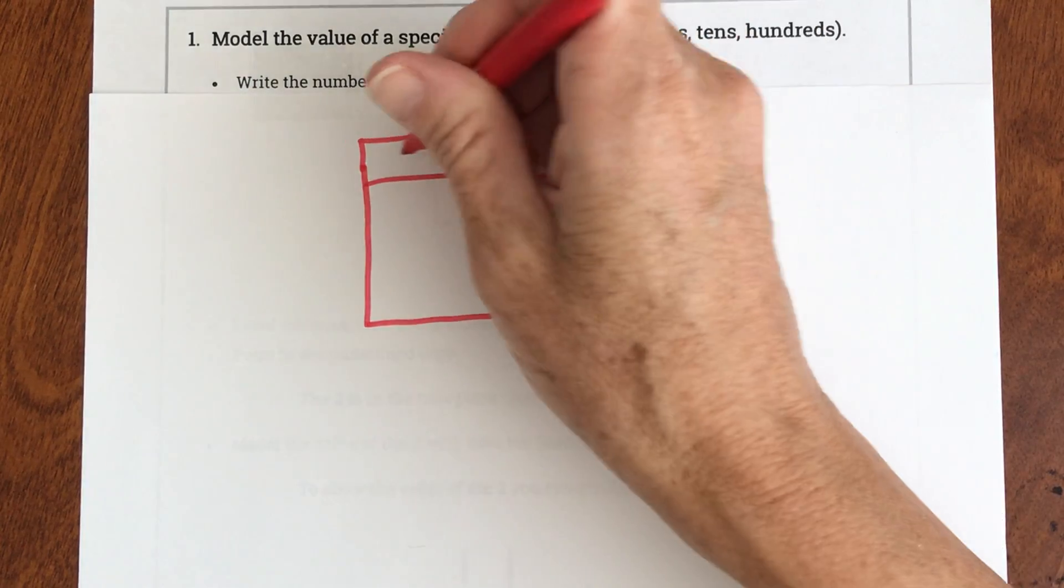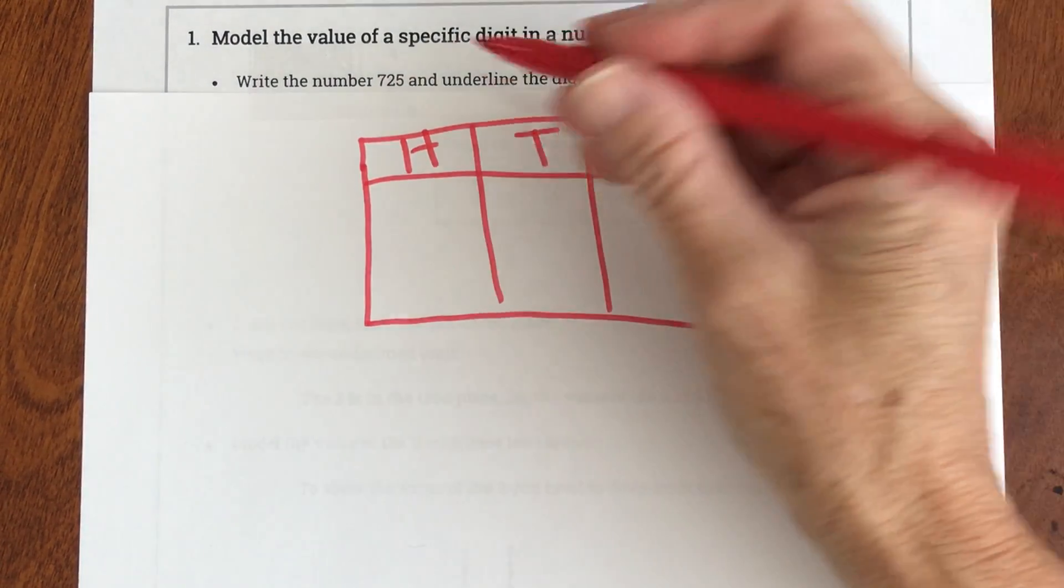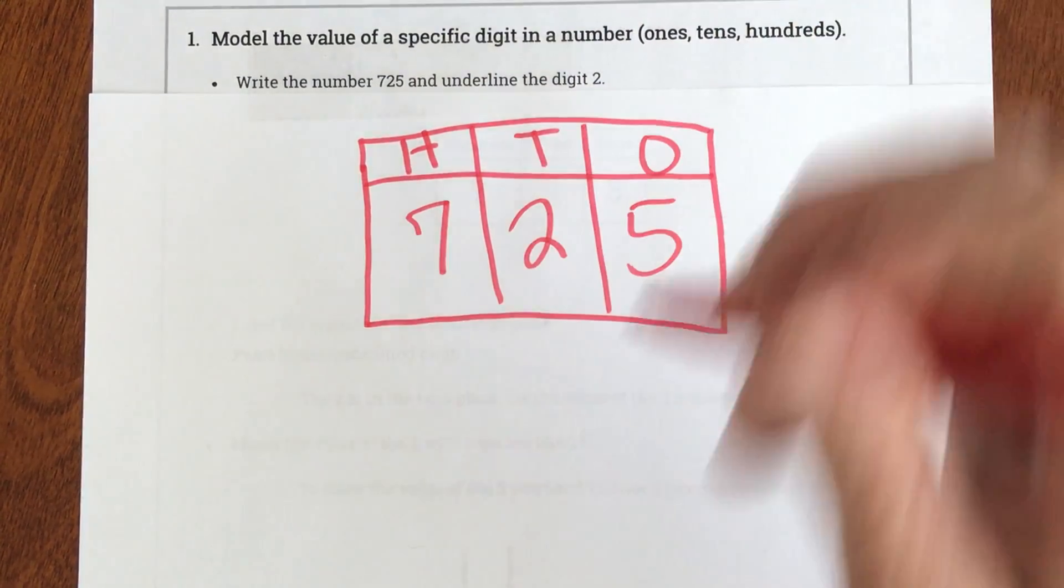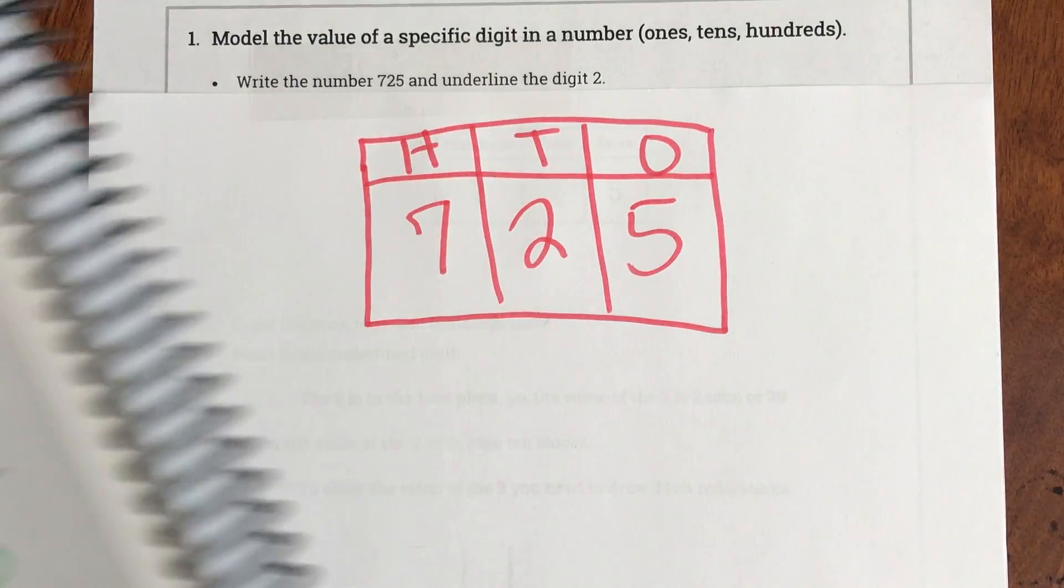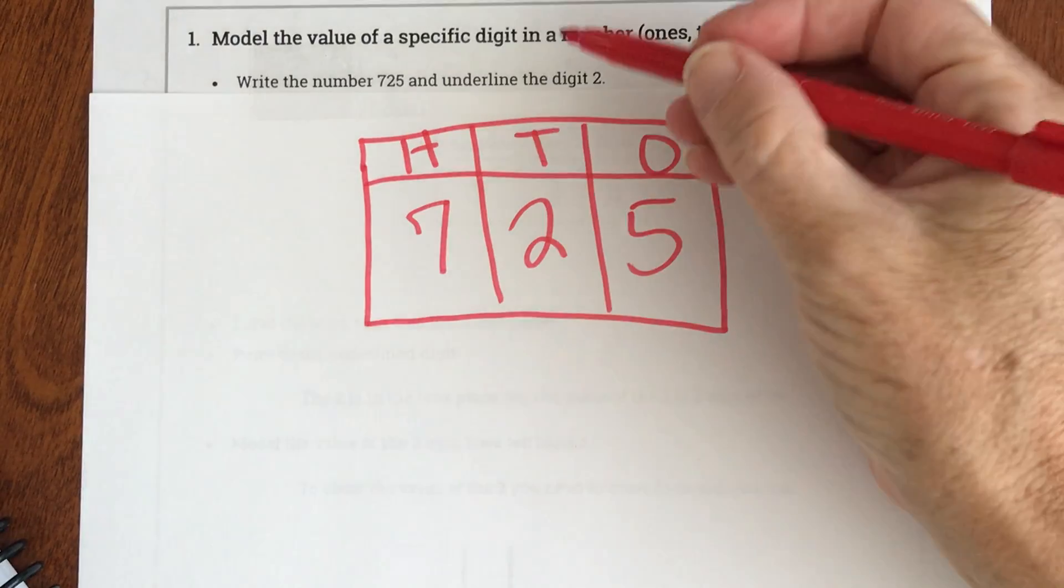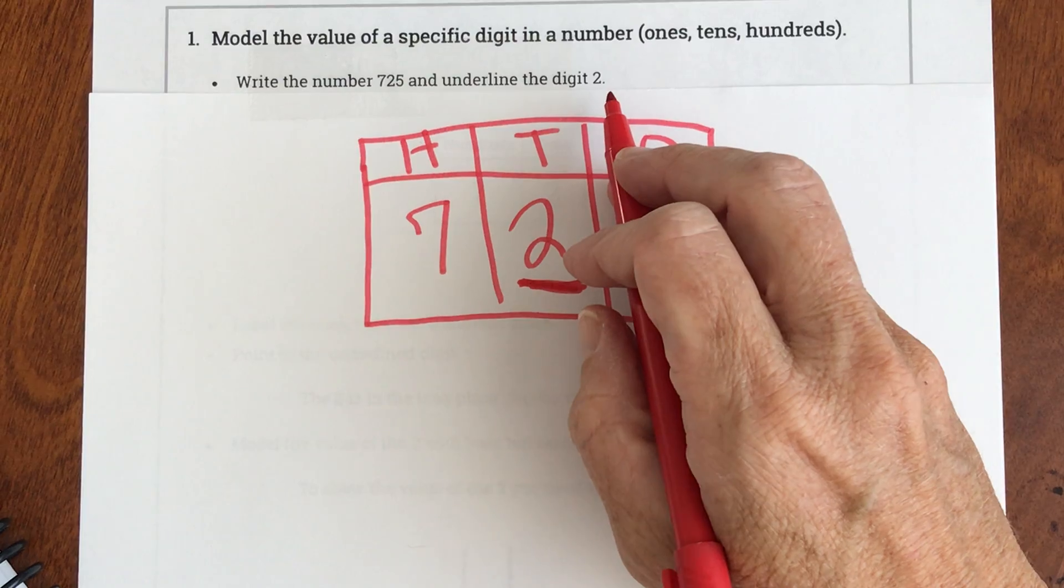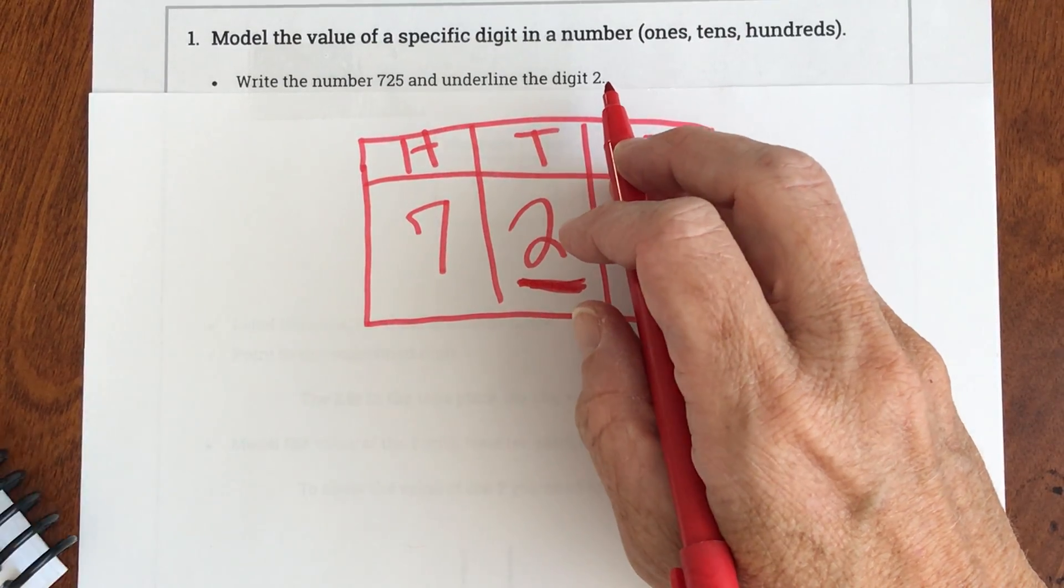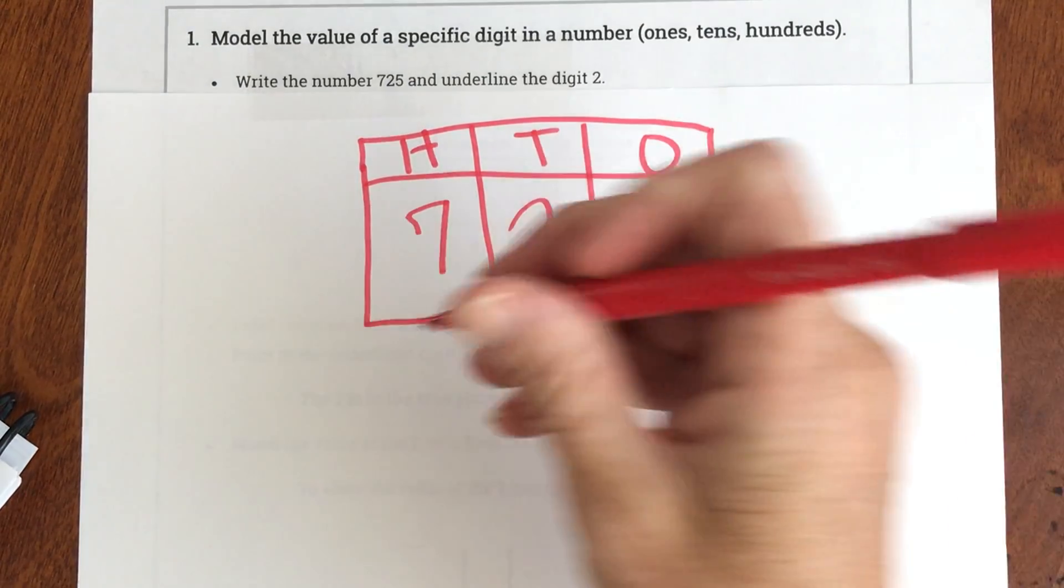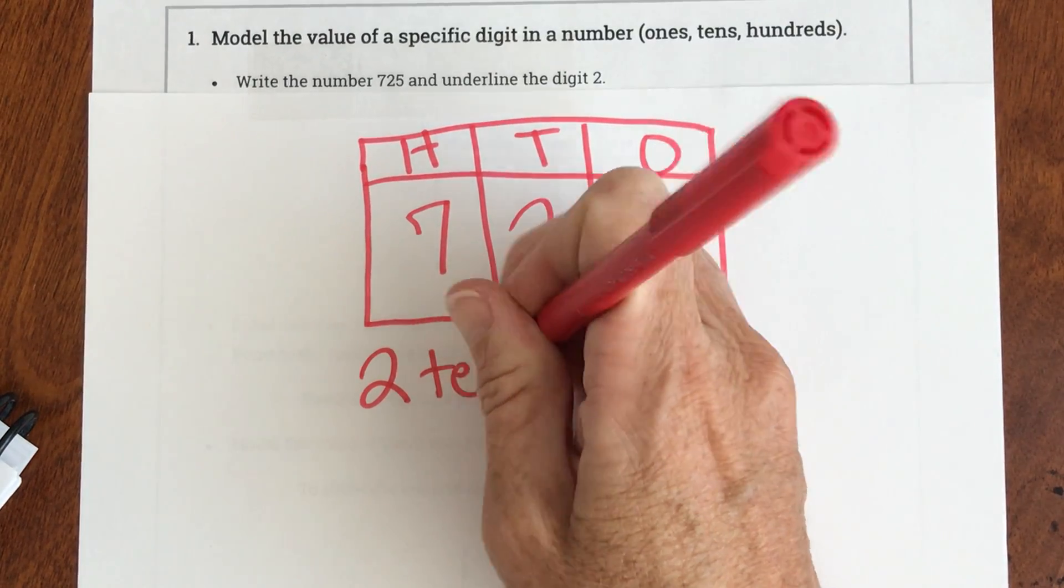My ones, my tens, and my hundreds. Okay then I'm going to put this number in there, a 725. Okay my next step says identify the underlined digit. So they want me to underline the 2. It says underline the digit 2. Okay then they tell me write the value of the digit. Well this is worth 2, and this is 2 tens.